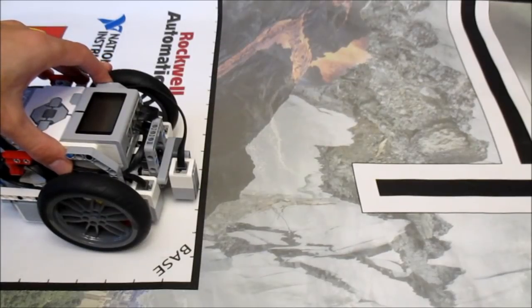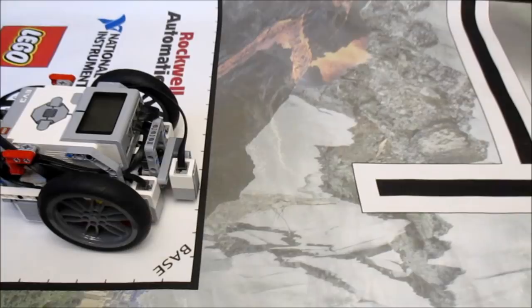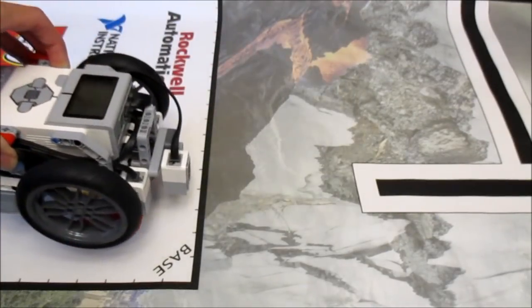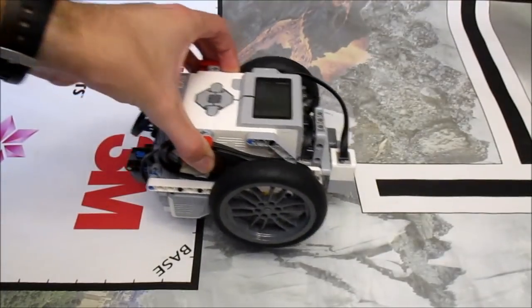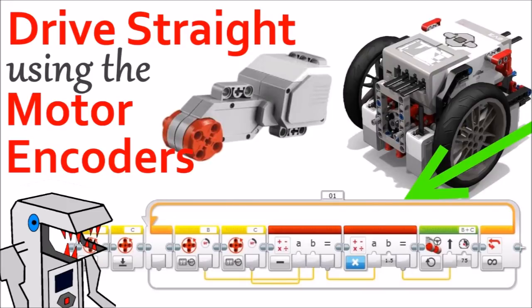So to counteract this, you might also want to incorporate my drive straight program, either by using the motor encoders or the gyro sensor to keep your robot driving straight during the first stage of this program, where it's just driving up to get close to the line. And that will make your program more consistent. If you're interested in that video, I'll put a card up in the top right corner of the screen so you can go watch that.